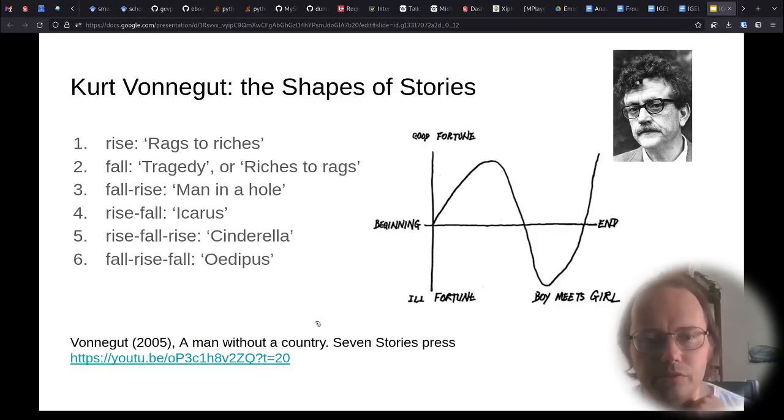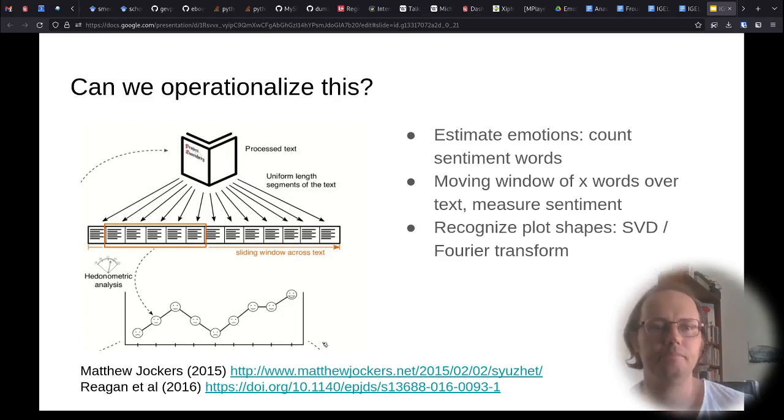This idea appealed to digital humanities and around 2015 several people successfully implemented this idea. Matthew Jockers and Reagan et al. published about this idea and they used sentiment analysis to measure the sentiment in literature over time and then used mathematical algorithms to reduce the raw signal to supposedly universal plot shapes.